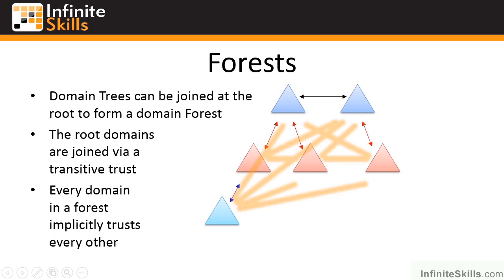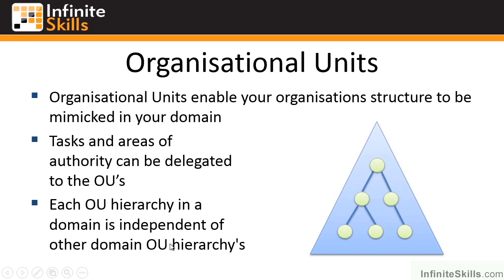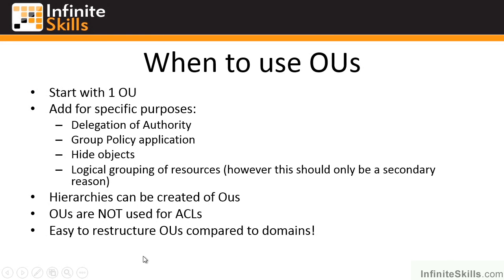This was the overview. There are other concepts like organizational units, which enable us to group objects together — computers, users — and then I can delegate administration, apply group policy, or use them for organizing objects. The key uses are delegation, group policy application, hiding objects, and logical grouping. They can't be used for access control entries, so you're not using OUs instead of groups — this is about structuring for mainly delegation and group policy application. This concludes the overview and review of Active Directory, and we're now going to build on this for some more advanced concepts.